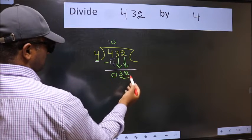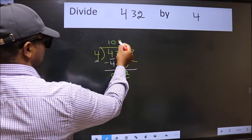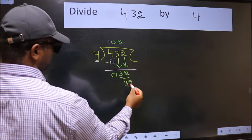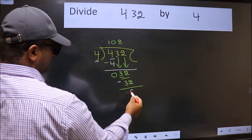Now 32. When do we get 32 in the 4 table? 4 times 8 is 32. Now we should subtract. We get 0.